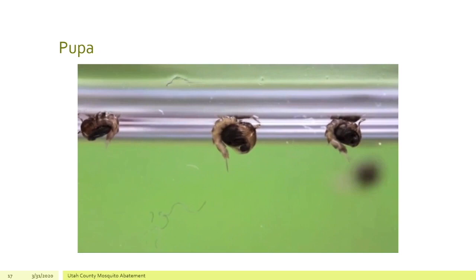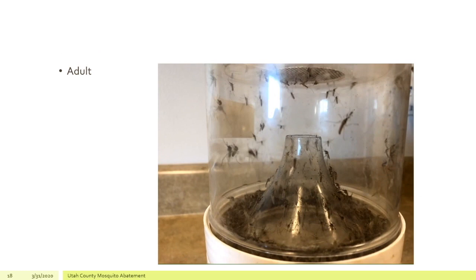The next stage is the adults. You can see these adults flying here in this cage — there are literally hundreds of adults, and they are actually out seeking a blood meal.